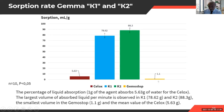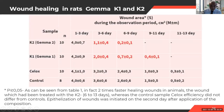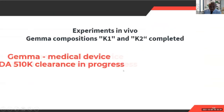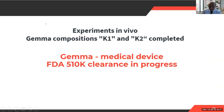Silux absorbs blood significantly less effectively than our products — 10 to 20 to 30 times worse. Regarding wound area healing: K2 shows accelerating healing from day three, with day nine already showing rapid healing. K1 also supports healing without preventing it, but K2 exponentially increases the healing process compared to K1 due to its different composition.